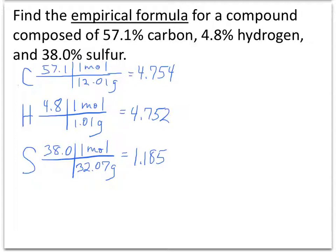Of these three numbers, we want to pick the smallest one and establish that to be the 1. Therefore, we're going to divide that into each of these. Since sulfur at 1.185 is the smallest, that's the one we'll divide into carbon and hydrogen's number.